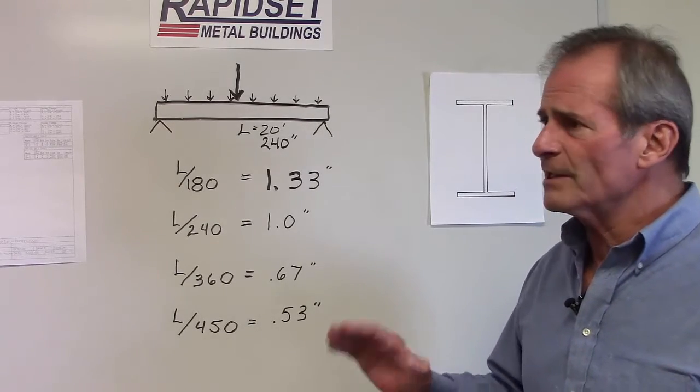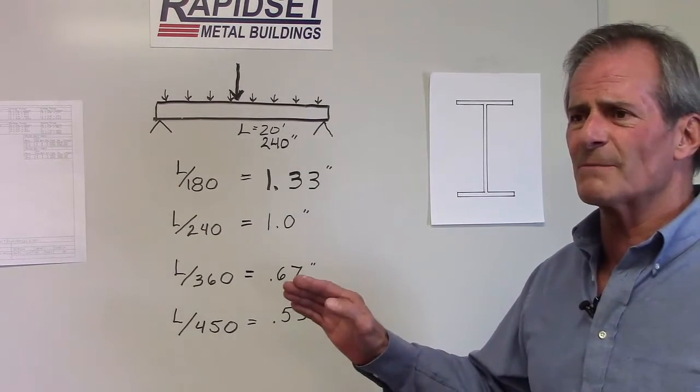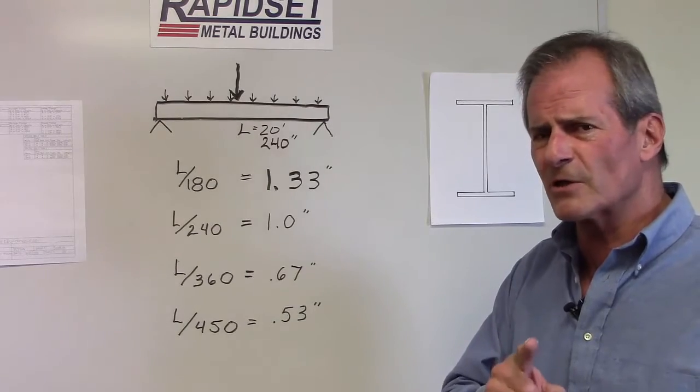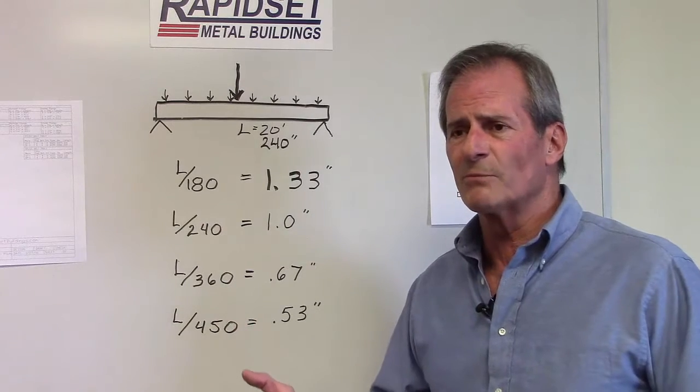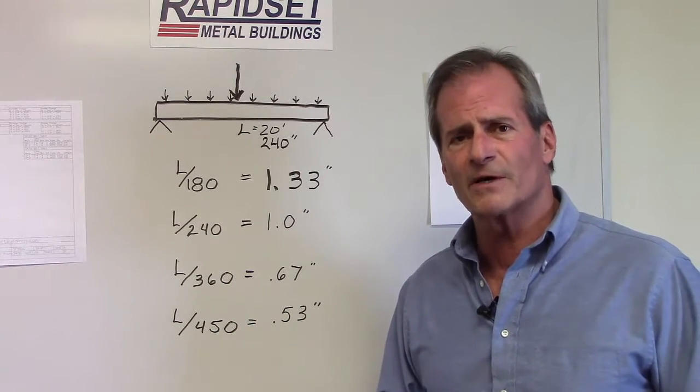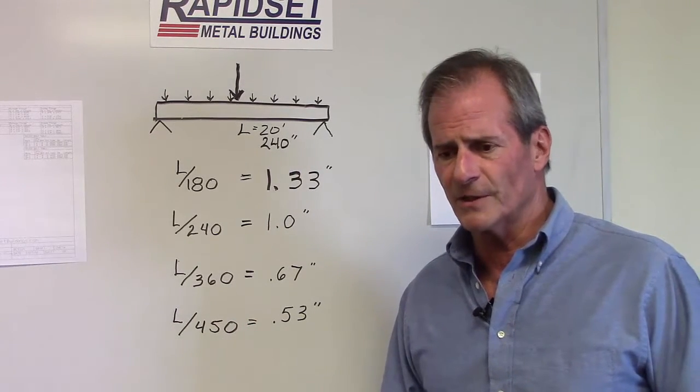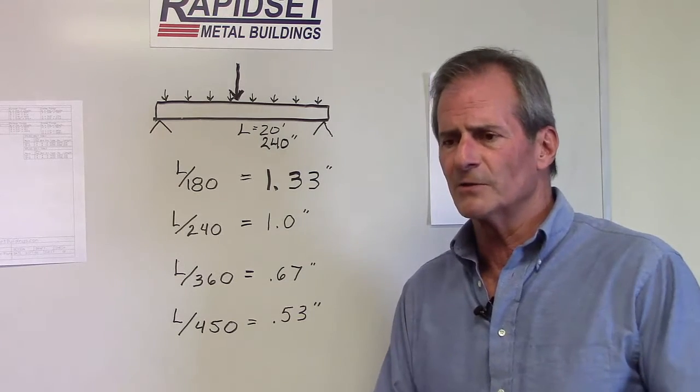In a little 30 by 50 foot example, and these were things that we covered under the codes and loads video, you take a look at that 30 by 50 building, a small building. It's roughly got about 1,500 square feet of roof area to it, and let's apply a mild load to it.